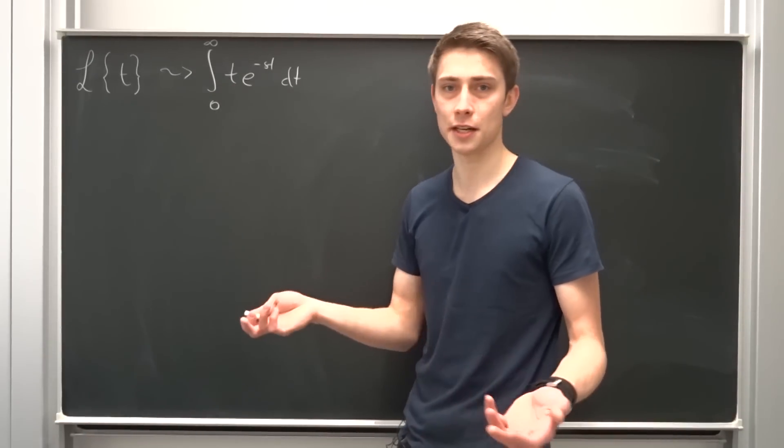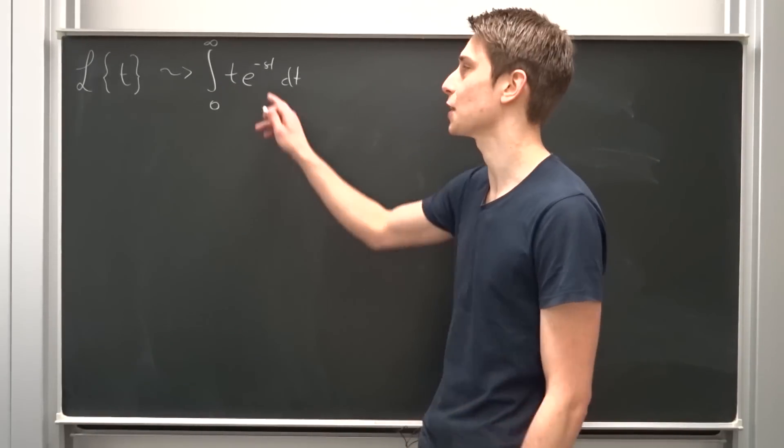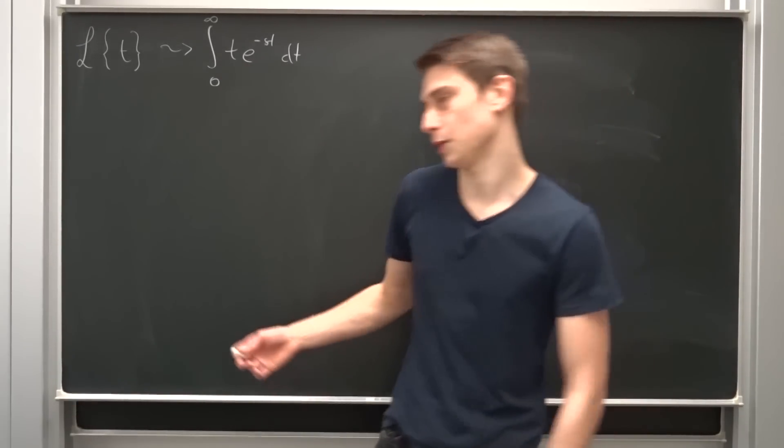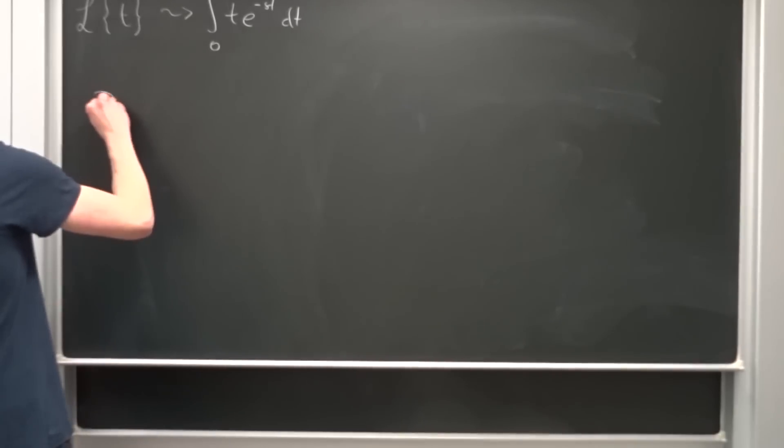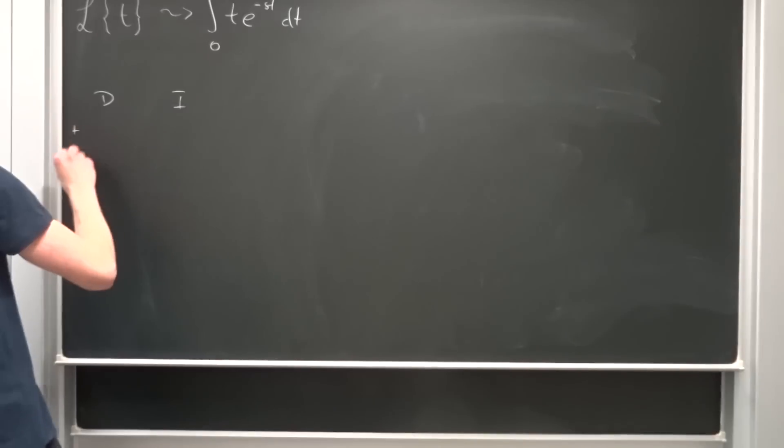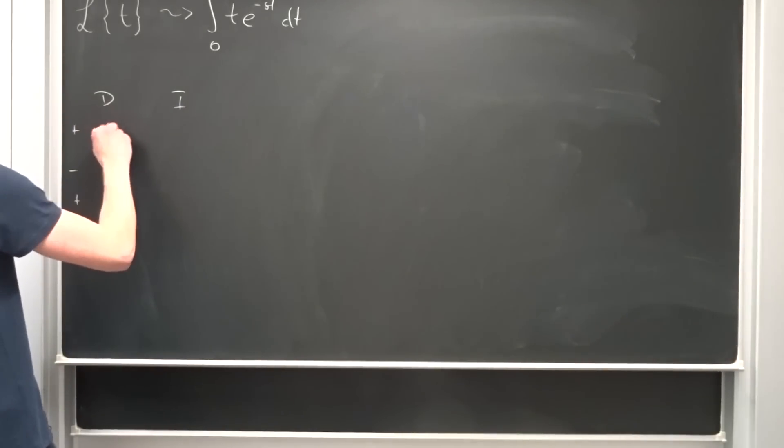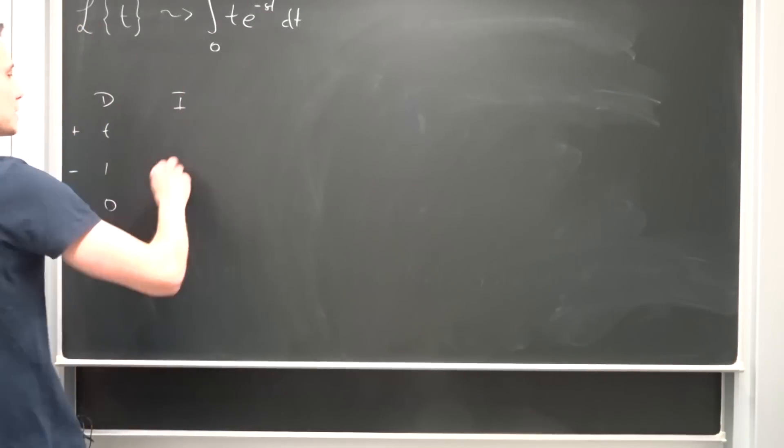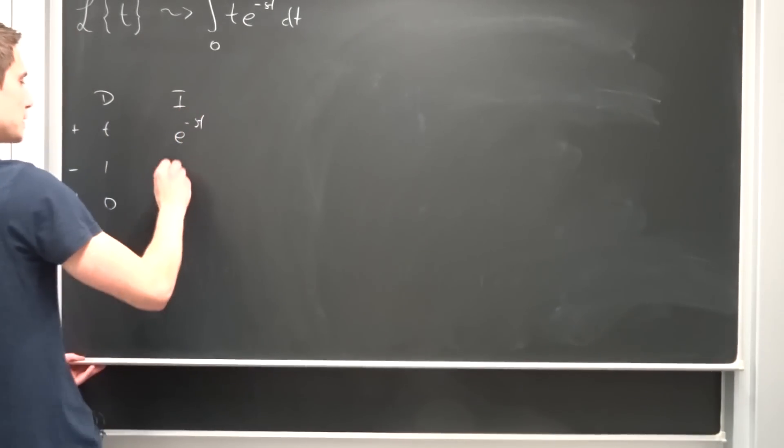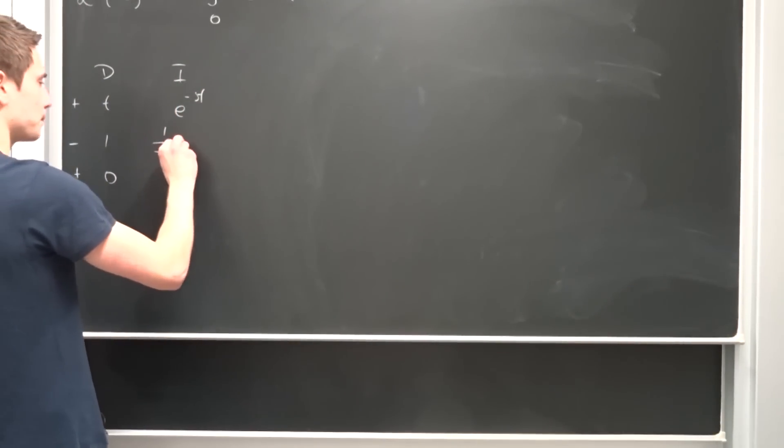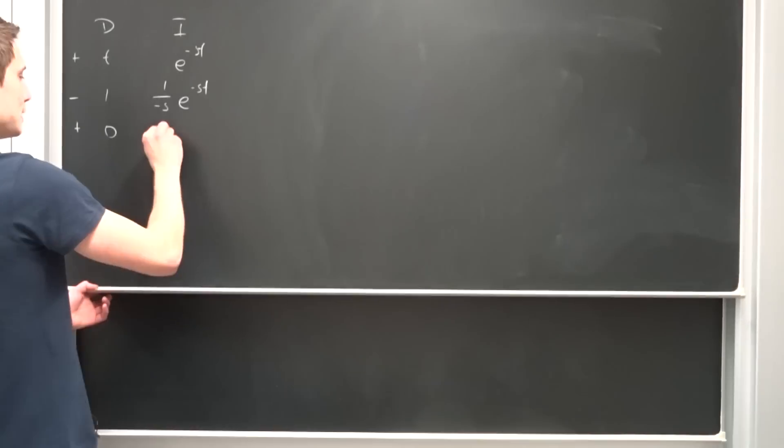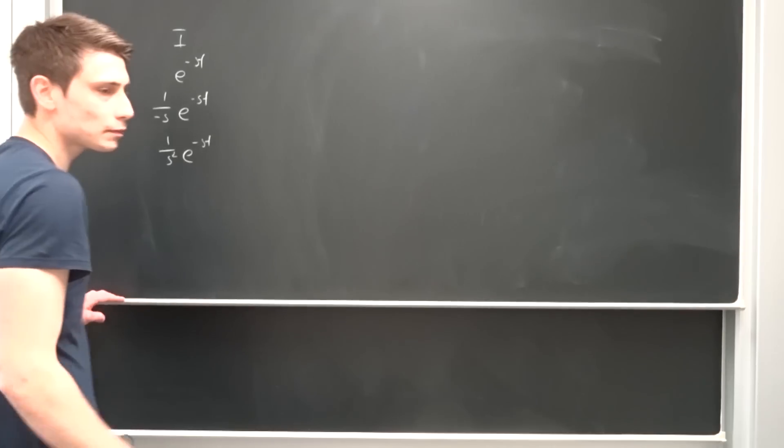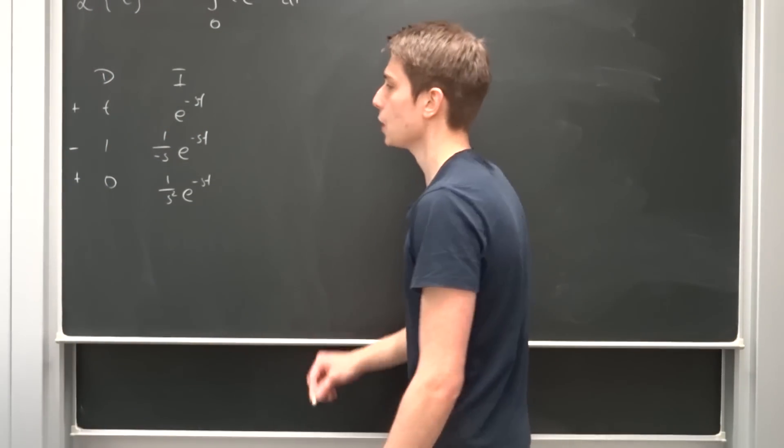So we should differentiate t because it goes to 0 way faster than e to the minus st. So let's differentiate t, so this becomes 1 and in the end 0. And let's integrate e to the minus st. So that's 1 over minus s e to the minus st, and then it's 1 over s squared e to the minus st. So that's quite easy.